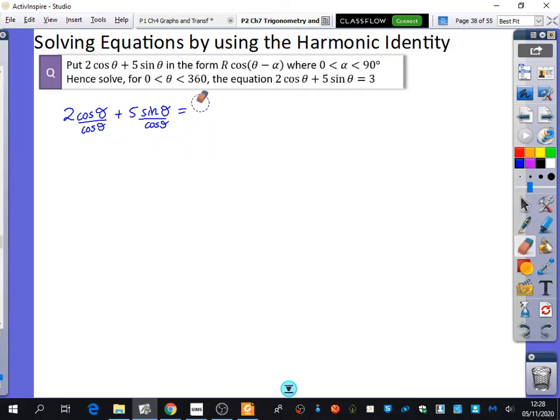But when it's not equal to 0, it becomes a different kind of question. When it's equal to 3, if I tried to do 3 divided by cos θ, I would have 2 plus 5 tan θ equals 3 over cos θ, which is sec θ. And no longer can I solve that one using the same pattern. I could do some squaring and some things like that, but actually that's going to be messier than just using the harmonic identity.